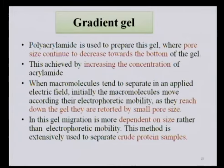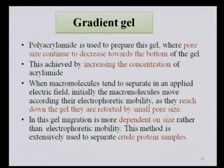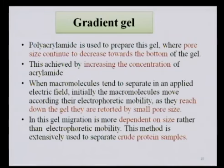Gradient gel has a pore size that continuously decreases towards the bottom. This gradient is achieved by increasing the concentration of acrylamide. When macromolecules separate, they initially move according to their electrophoretic mobility, and as they move down they get retarded by the small pore size. In gradient gel, the main separation is based on the size of the molecule, not the charge.